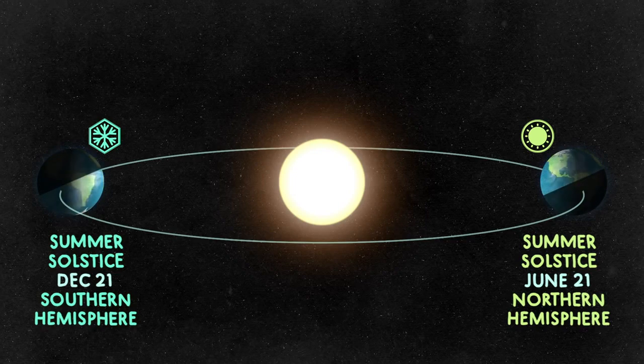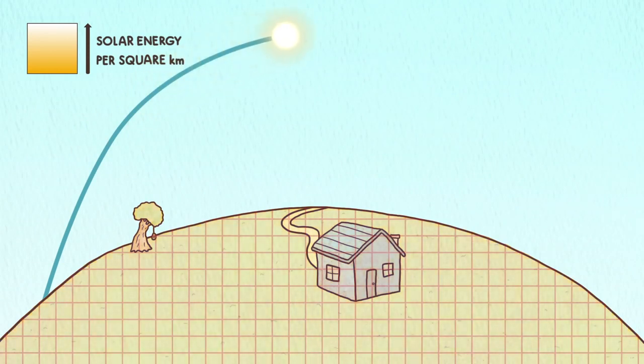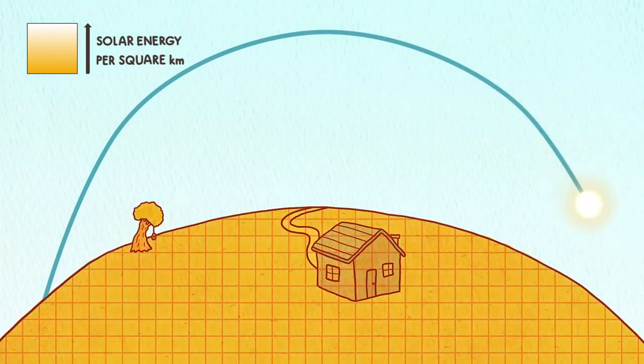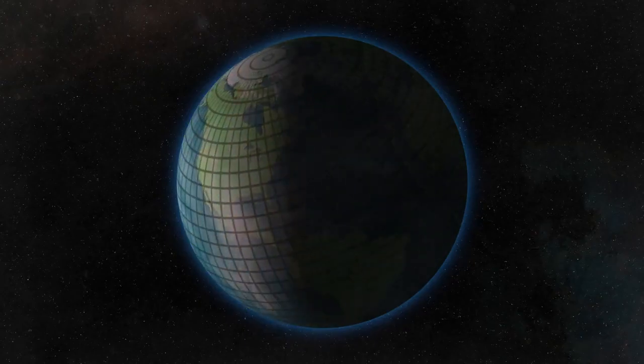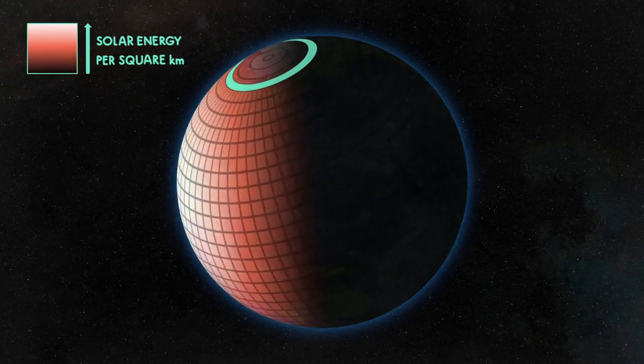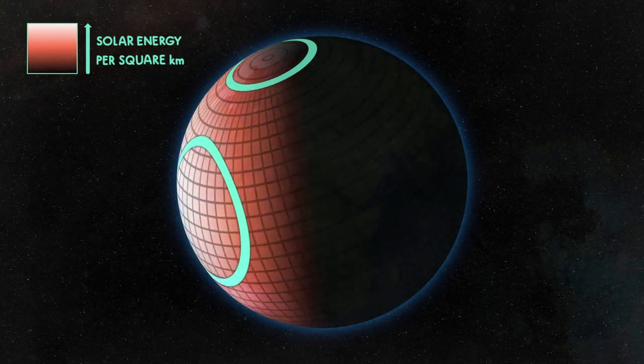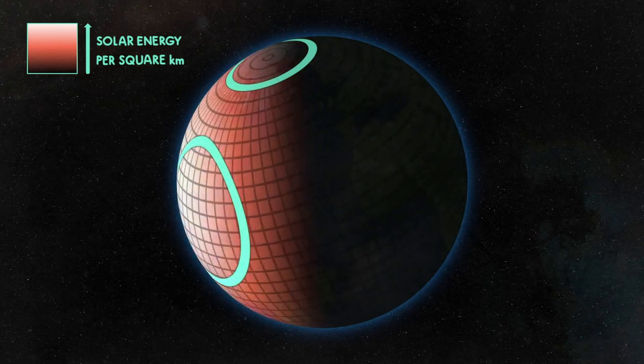Remember those increased summertime daylight hours? And, solar energy per square kilometer increases as the Sun gets higher in the sky. So, when the Sun's at an angle, the amount of energy delivered to each square of the sunlit area is less. Therefore, even though the North Pole is getting 24 hours of daylight to warm up, the sunlight it receives is very spread out and delivers less energy than a place further south, where the Sun is higher in the sky because it's more tilted toward the Sun.